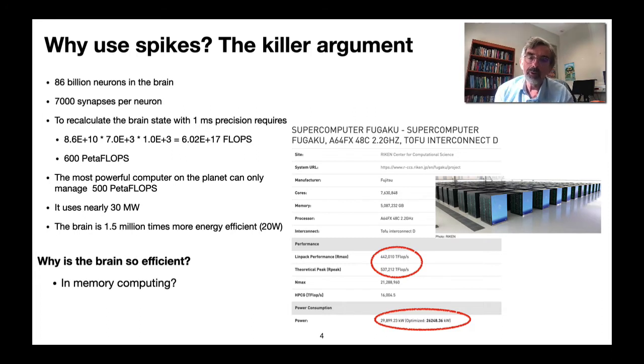Well this week we've been hearing quite a lot about using in-memory computing and it's true that a lot of the energy required by these sort of supercomputers is moving data around, so if you can get the computations done where the memory is that can be a big advantage, but I'm going to argue that using spikes is perhaps even more significant.